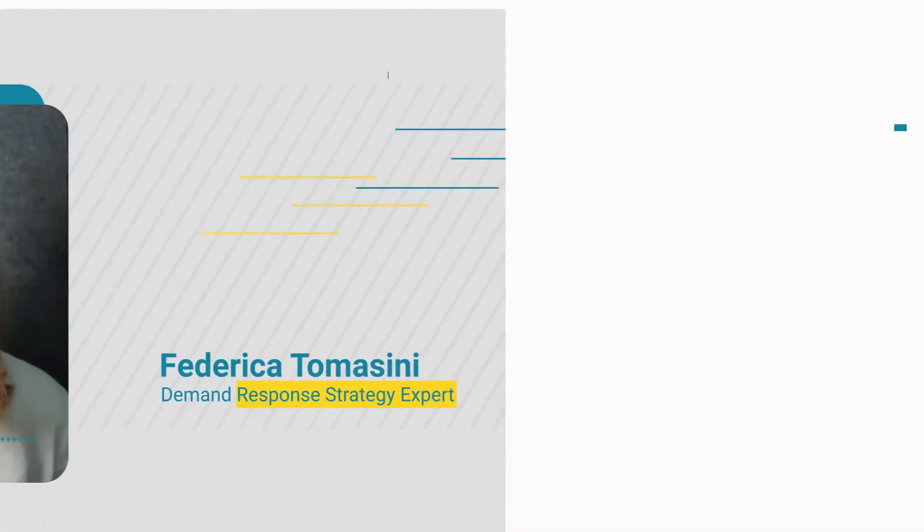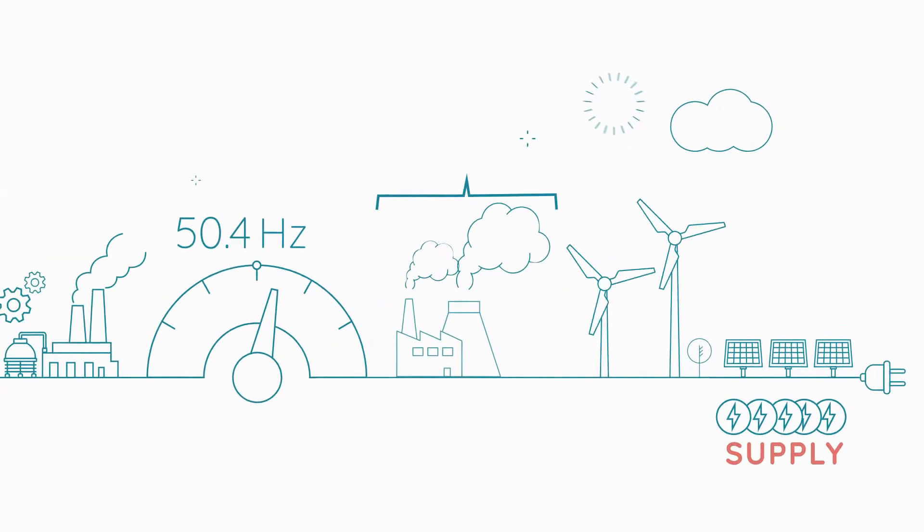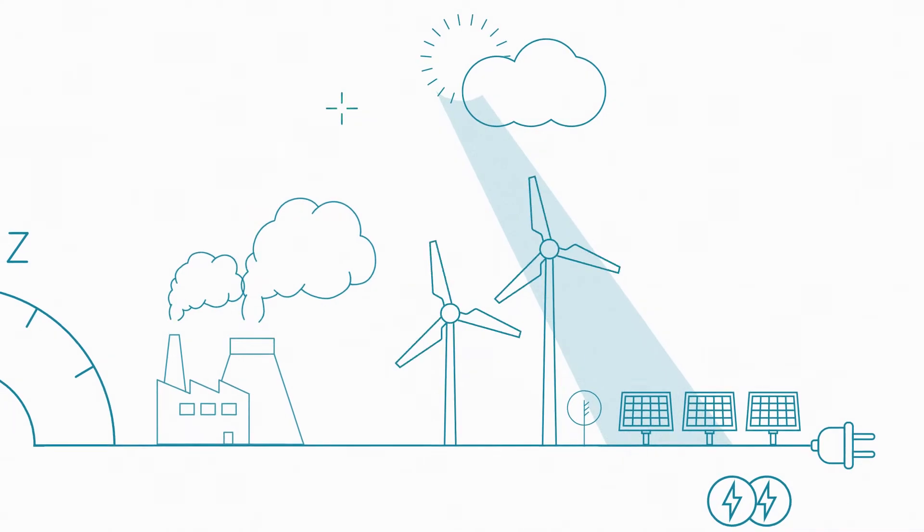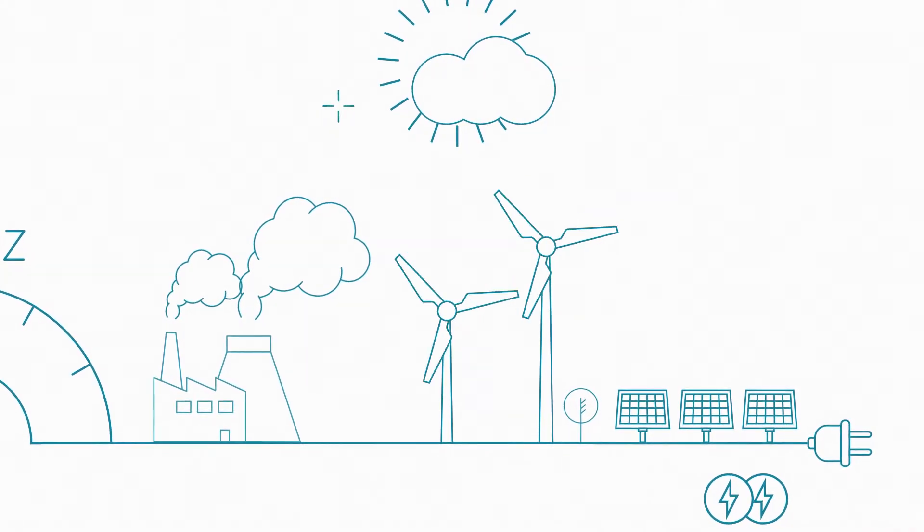So we need more innovative ways to deliver the flexibility that the grid needs. Coal and gas generators provided the flexibility in the past. But as we advance, electricity systems will need faster acting services to allow for the introduction of renewables.